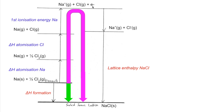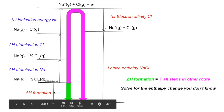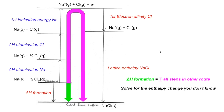We then combine that electron with the gaseous chlorine atom to create the gaseous chloride ion — that's the first electron affinity of chlorine. The enthalpy change of formation (the green route) is equal to the sum of all the pink changes. So if we were missing, say, the lattice enthalpy, we would simply rearrange and solve for it.